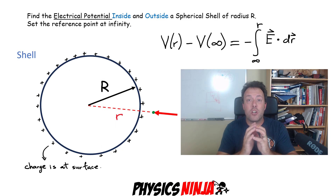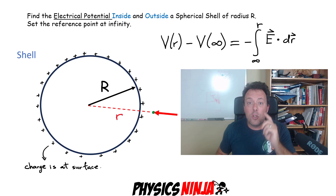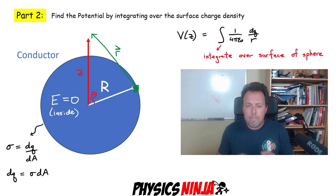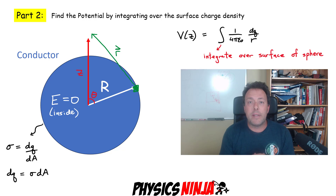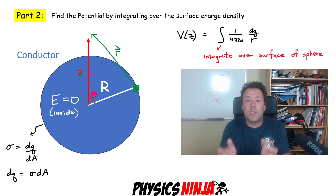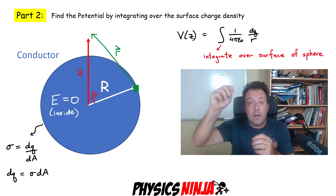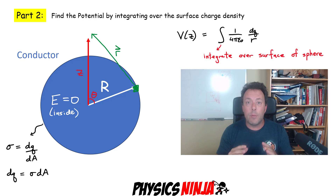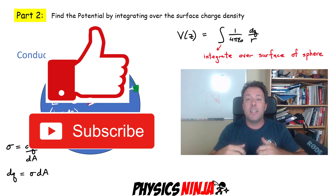If you have a shell, the charge is right on that surface layer, and you want to use this equation to calculate the electrical potential at a point outside the shell versus inside the shell. In Part Two, I'm going to show you how you can also calculate this electrical potential by integrating over the surface of the charges — how to set up that integral and evaluate it at a point outside and inside the shell. Part Two is a little bit harder mathematically, but we're going to get to the same result. It's always good to have multiple ways to solve a problem. If you like it, give it a thumbs up and consider subscribing to Physics Ninja.